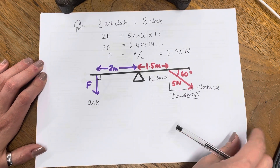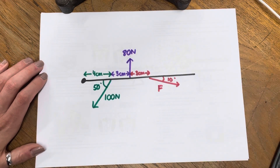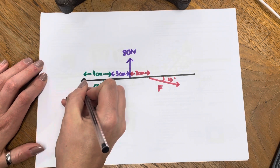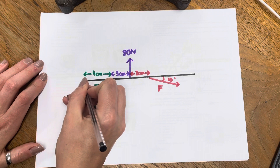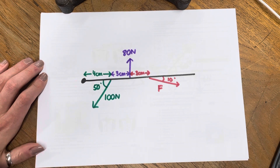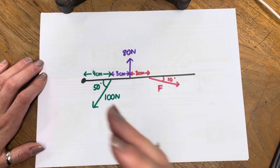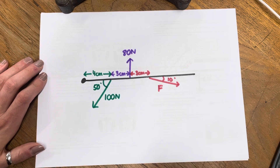Next problem — a little bit harder, because I've added some more angles in. And I've also moved the pivot to this point here. I'm going to get you to press pause, have a go at the problem, see what you can do, and when you're either finished or really stuck, press play and we'll carry on.